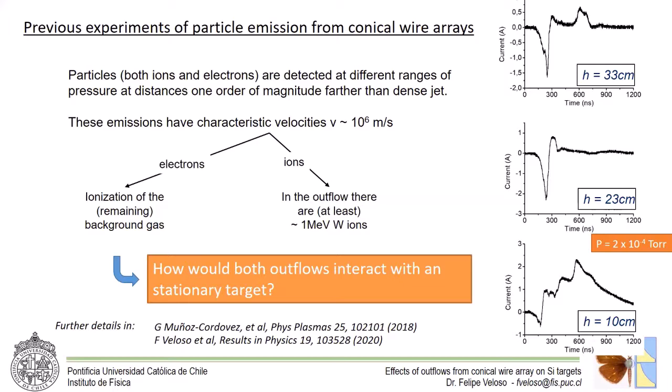Besides this, we measured ion speeds of the order of 10^6 meters per second indicating a kinetic energy of tungsten ions up to 1 MeV. So the question of what would happen to the silicon targets when these outflows interact with them rapidly came out.